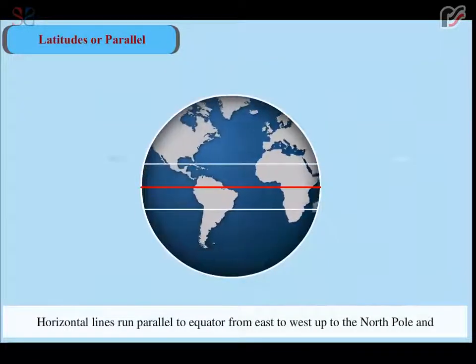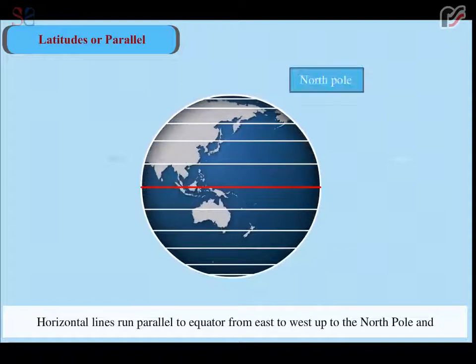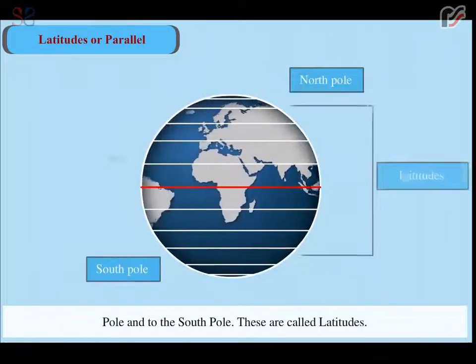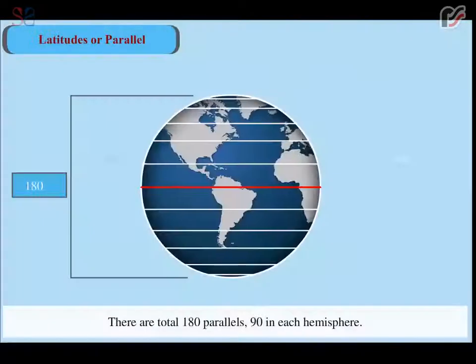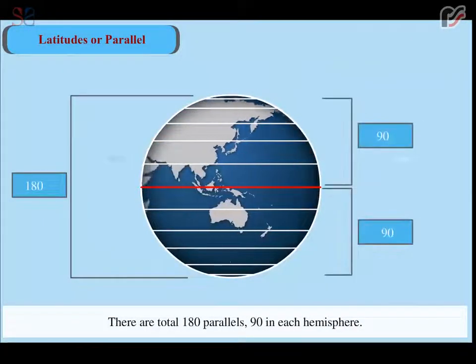Horizontal lines run parallel to equator from east to west, up to the north pole and to the south pole. These are called latitudes. There are total 180 parallels, 90 in each hemisphere.